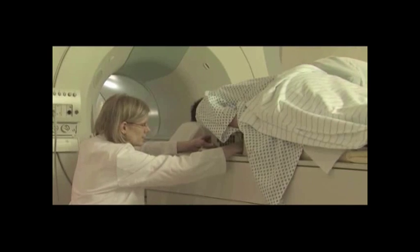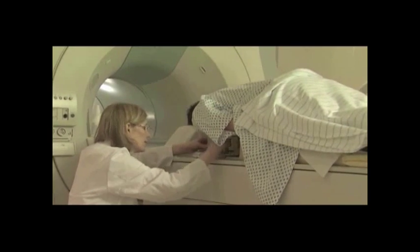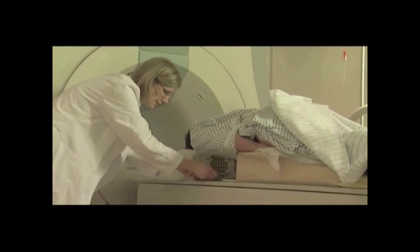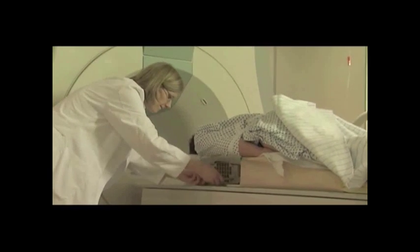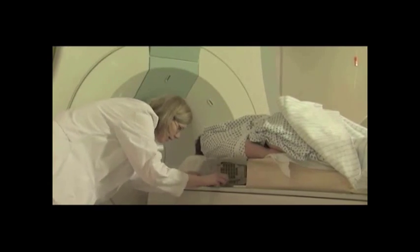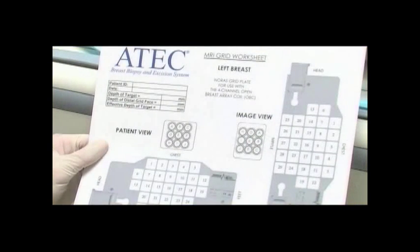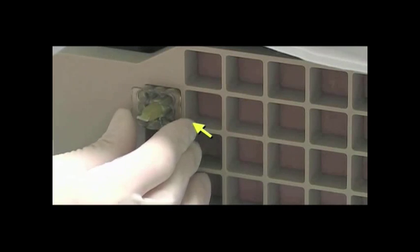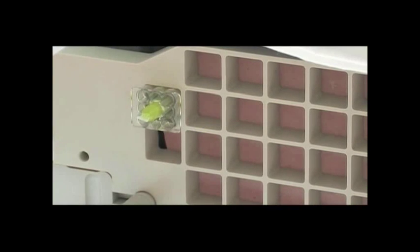Be sure the breast tissue protrudes through the immobilization plate. The skin surface should be taut in the grid space and clearly protruding. Without visibility of the plate over the area of interest, the lesion cannot be targeted. To determine target coordinates using manual calculations, a fiducial is placed into a grid space to use as a reference point before the physician begins the first scan.